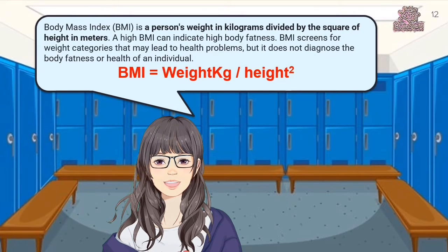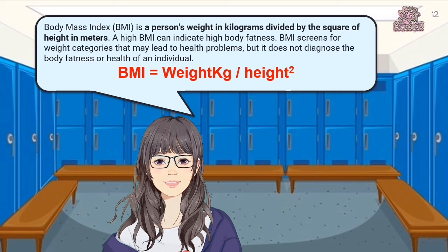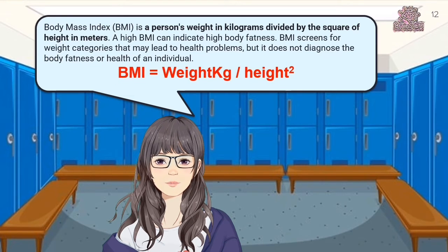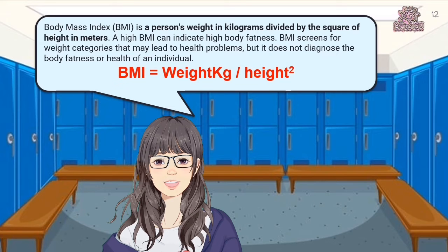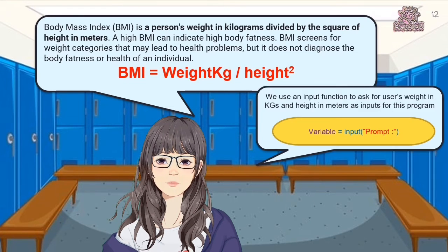Body Mass Index, or BMI, is a person's weight in kilograms divided by the square of their height in meters. A high BMI can indicate high body fatness. BMI screens for weight categories that may lead to health problems, but it does not diagnose the body fatness or health of an individual.